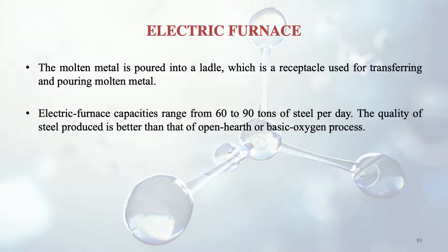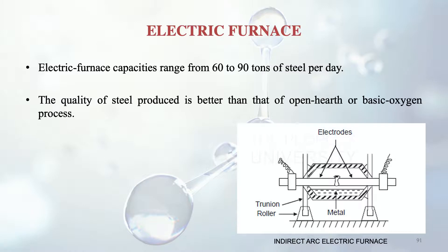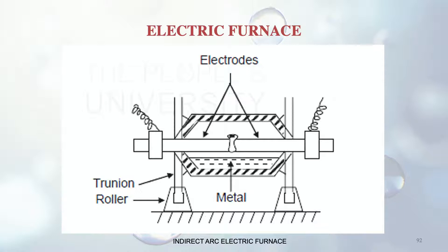The quality of steel produced by the electric arc furnace is better than that of the open hearth or basic oxygen process — it gives the best quality of steel among the three furnace types. There is also an indirect electric arc furnace, where the electrodes are placed differently compared to the direct arc furnace.